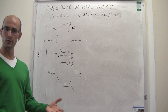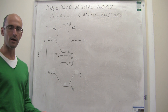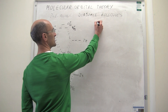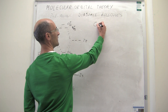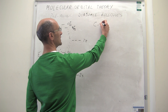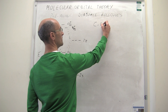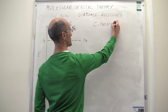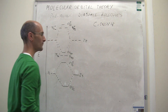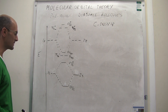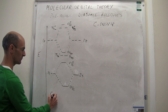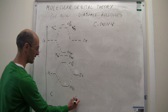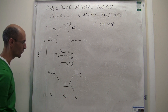We looked at boron 2 in the prior video; now we're going to look at carbon 2. The electronic configuration of the carbon atom would be helium, then 2s2, 2p2. So when we come to this diagram, we can write one carbon atom, the other carbon atom, and this is going to be the carbon 2 molecule.